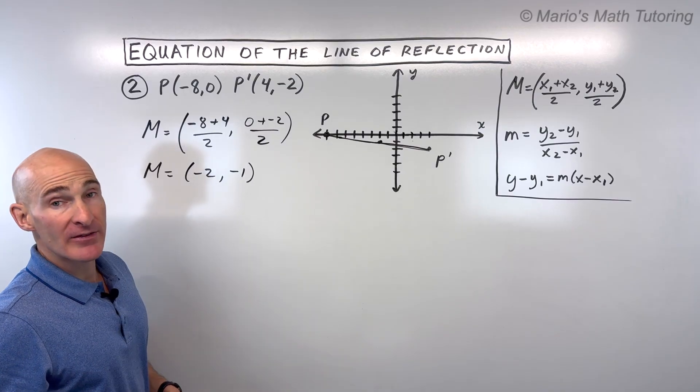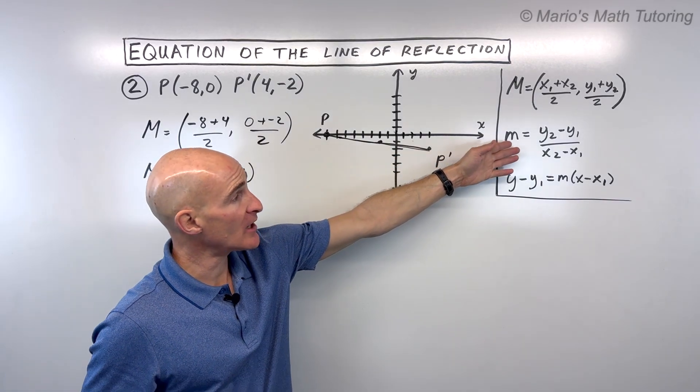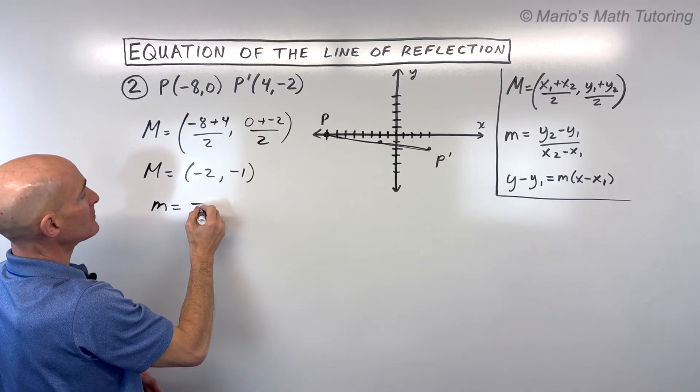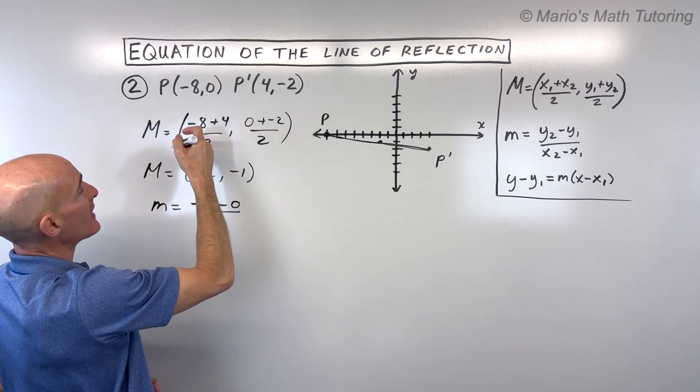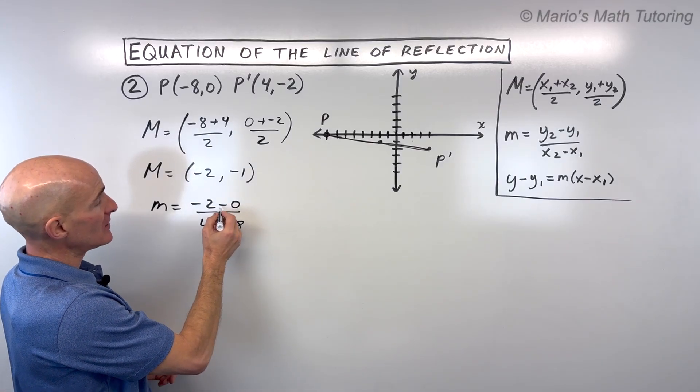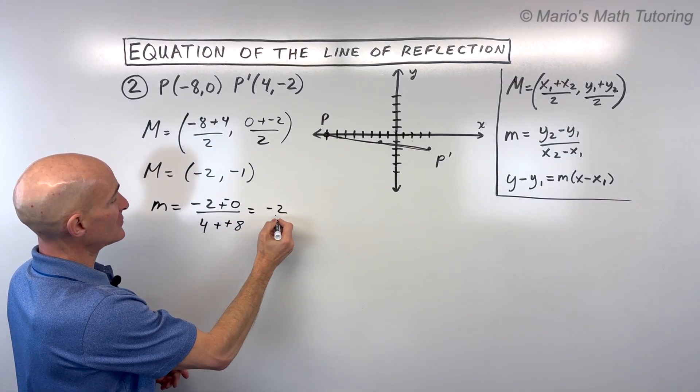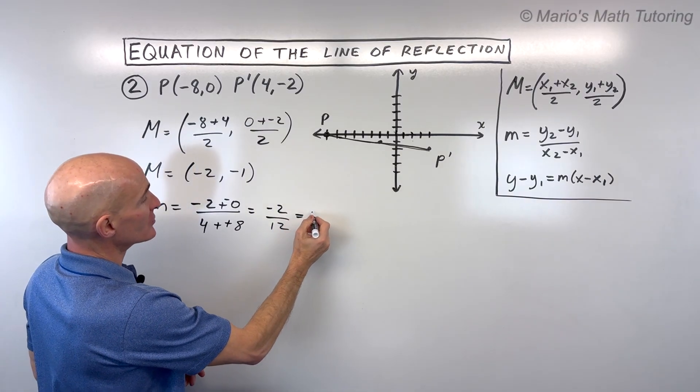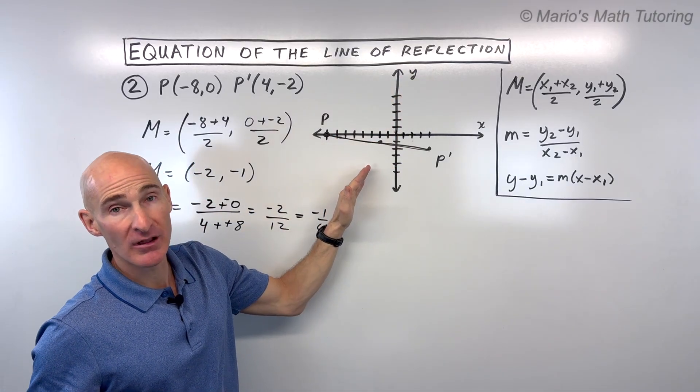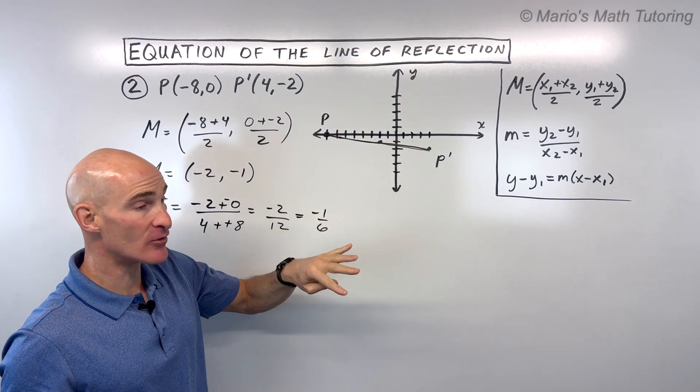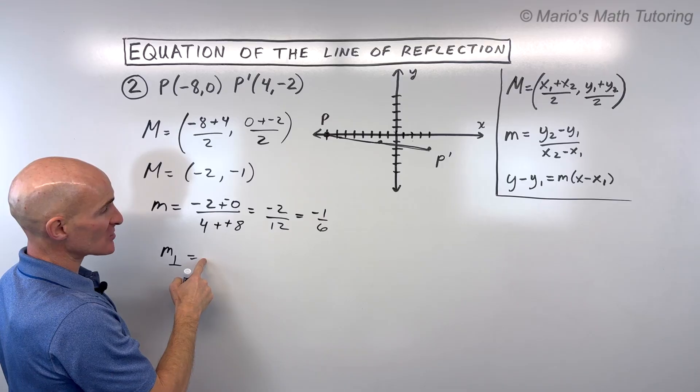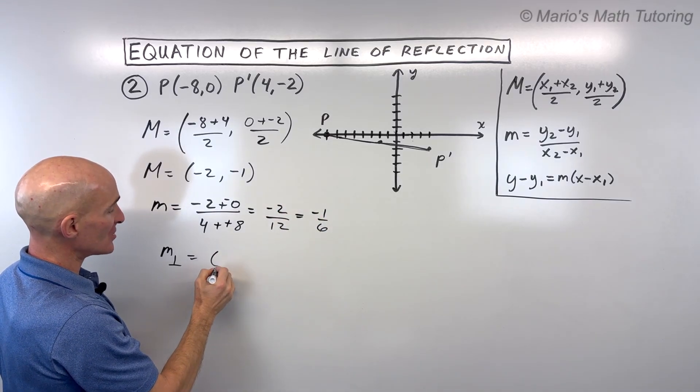And now we want to find the slope between P and P prime. So using our slope formula, we've got Y2 minus Y1 over X2 minus X1. Be careful with the subtraction. That's like adding the opposite. So we get negative 2 over 12, which is equal to negative 1 sixth. Now that's the slope of this line. We want the perpendicular line. So we're going to take the opposite reciprocal. So the way that we do that is we just change the sign from negative to positive. If this is positive, I'd make this one negative. And then we flip that fraction. So this is just going to be positive 6.